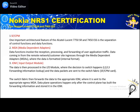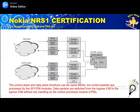The MDA first receives the data from the customer and converts it into an internal format that can be understood by the IOM. The data is then processed by the IOM module, where the decision to switch happens — whether it's Layer 2 or Layer 3. The IOM also keeps the forwarding information. The data packet is then sent to the SF/CPM: data goes to SF and control functions go to CPM.